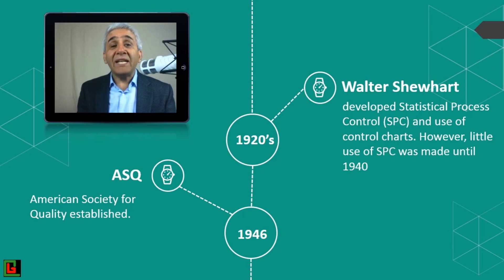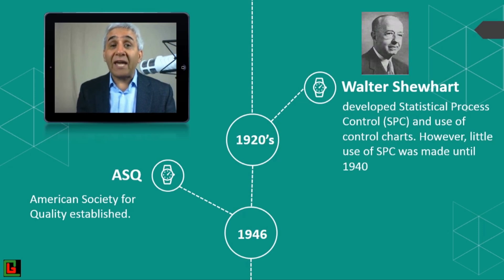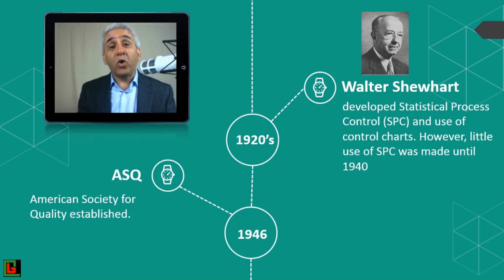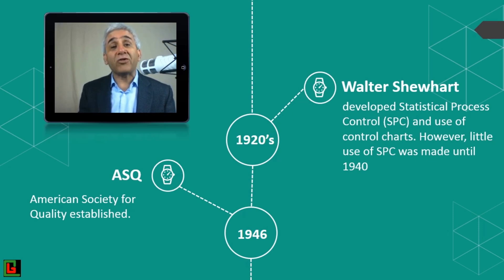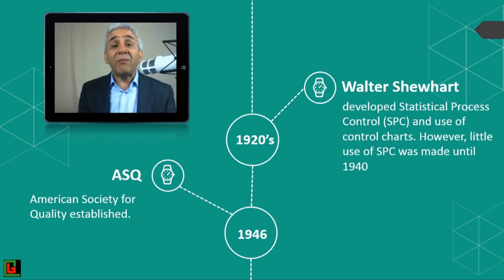Way back in the 1920s, Walter Shewhart developed the concept of Statistical Process Control (SPC) and used control charts. At that time there was little use for these control charts, but looking back, the backbone of the Six Sigma concept is control charts — because control charts used plus or minus three sigma, which was expanded to plus or minus six sigma when Six Sigma was introduced by Motorola.